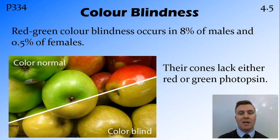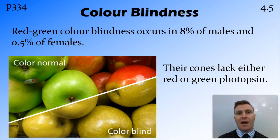In this case, the photopigment that picks up red is not working, so they'll see all of these apples as some shade of green. This can be hard, especially when driving, when you're trying to pick up the difference between red and green traffic lights.